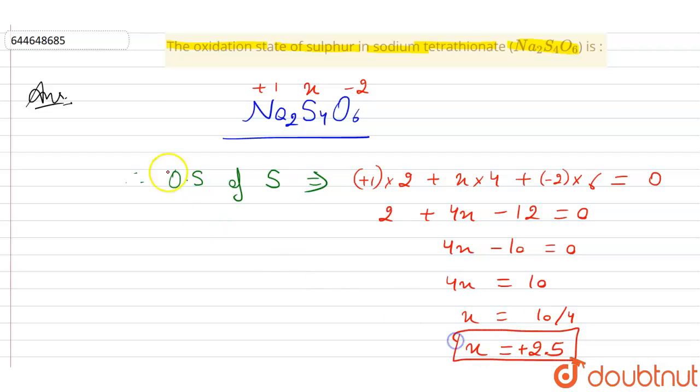Therefore, the oxidation state of sulfur in sodium tetrathionate is plus 2.5.